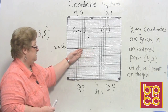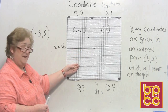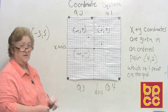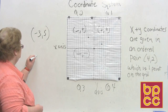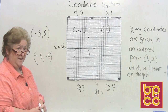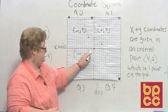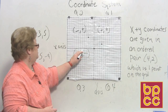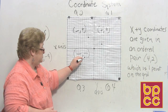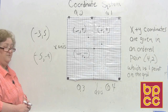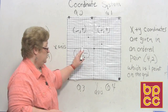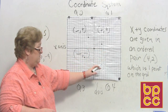In quadrant 3, we go to the left (negative x) and down (negative y). For example, (-5, -4): start at the origin, move left five, then go down four. There's the point for the ordered pair (-5, -4).